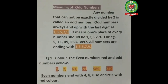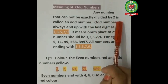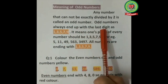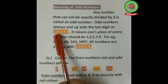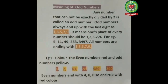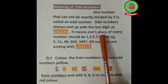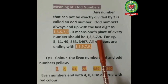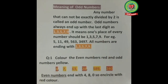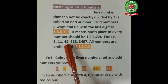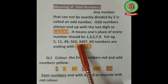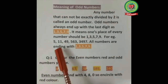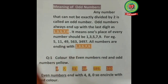Next, we will do odd numbers. Any number that cannot be exactly divided by two is called an odd number. Odd numbers always end with the last digit as one, three, five, seven, or nine. For example, the numbers 5, 11, 49, 563, 349, and 7 all end with one, three, five, seven, or nine.